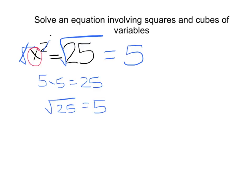But x could also be negative 5, because remember I could have had negative 5 times negative 5 equals 25. So I really have x equals 5 or negative 5.